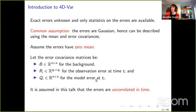Exact errors are unknown and we only have statistics on the errors available. The common assumption is that the errors are Gaussian, described by their mean and error covariance matrices. Assuming zero-mean errors, we have: B, the error covariance matrix for the background; Rᵢ for the observations; and Qᵢ for the model error. Throughout, I assume the errors are uncorrelated in time.